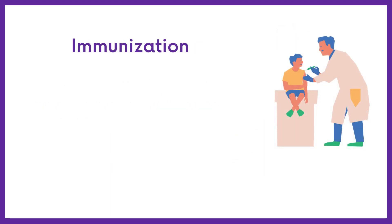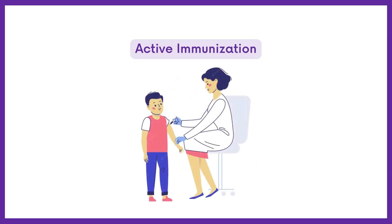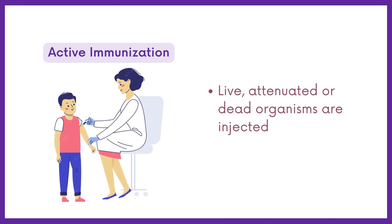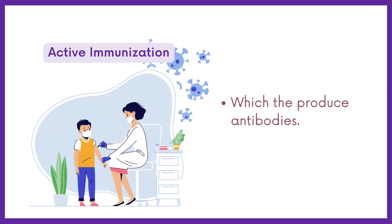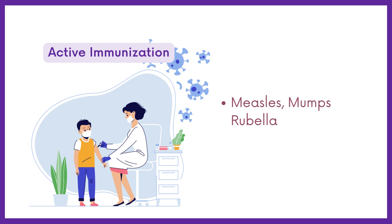The immunization process can be classified into two types: active immunization and passive immunization. In active immunization, live, attenuated, or dead organisms are inserted into humans in the form of a vaccine, which then produces antibodies to fight against the particular disease. This type of immunization produced by vaccines lasts for a prolonged time. Examples are measles, mumps, and rubella.